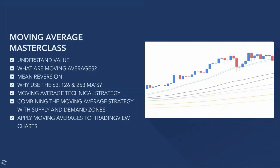What we're going to be covering is: understanding value, what a moving average is exactly, mean reversion, why we're going to be using the 63, 126, and 253 moving averages, the moving average technical strategy, and combining that with our core strategy — which is supply and demand zones.